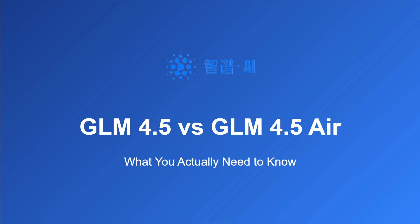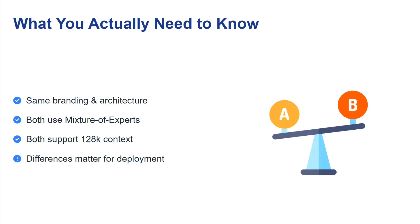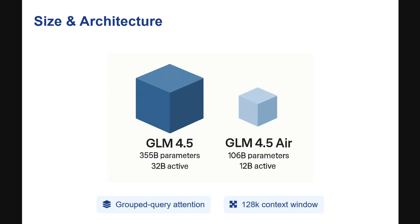Before we go into the differences, let's cover what they have in common. Both are by the same team, use the same architecture — Mixture of Experts — and both support a 128K context length. The difference matters mainly for deployment depending on whether you have the resources or not.